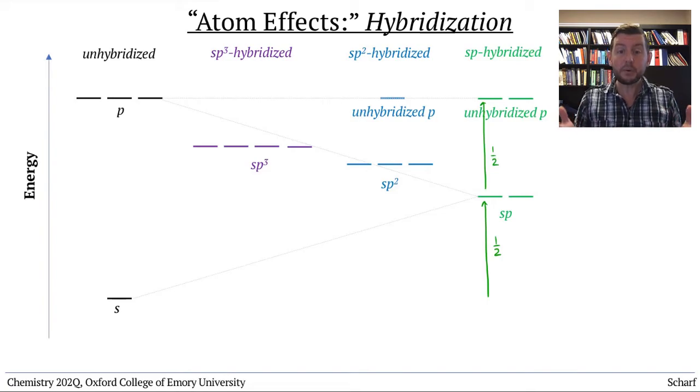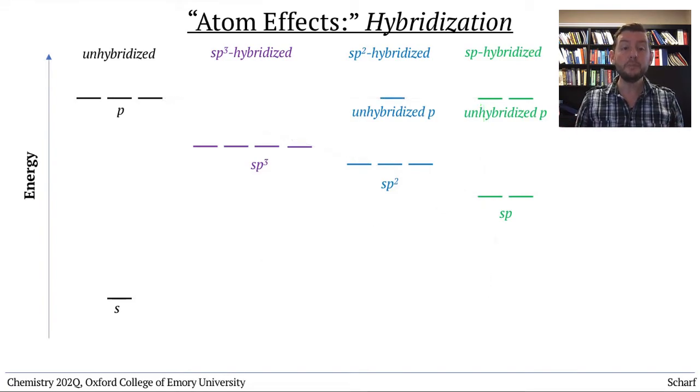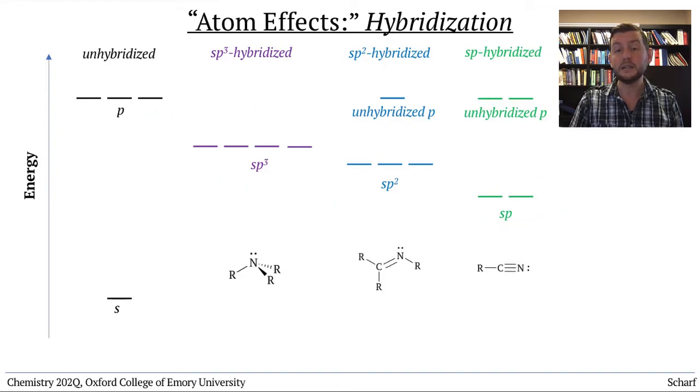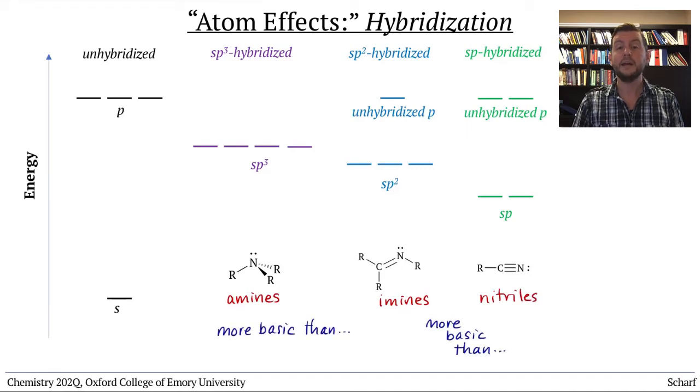And importantly, lone pairs almost always occupy these hybrid orbitals. Differences in lone pair energies due to hybridization explain why amines are more basic than imines, which are more basic than nitriles. The nitrogen lone pairs occupy SP3, SP2, and SP hybrid orbitals, respectively.